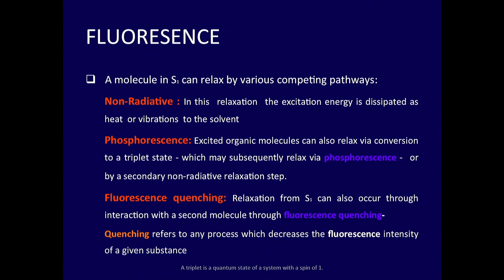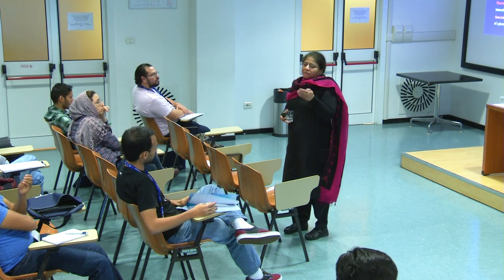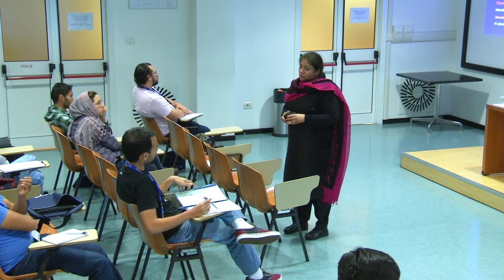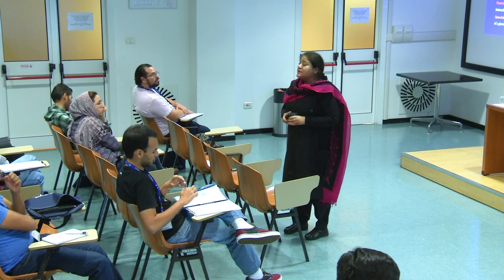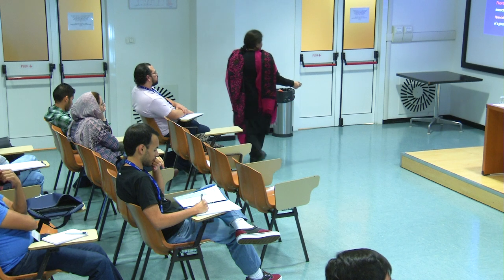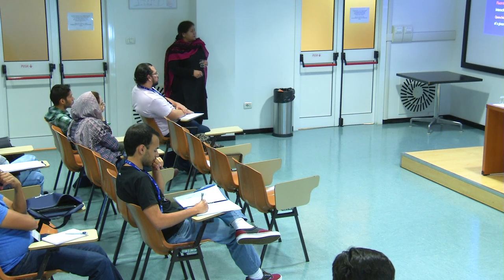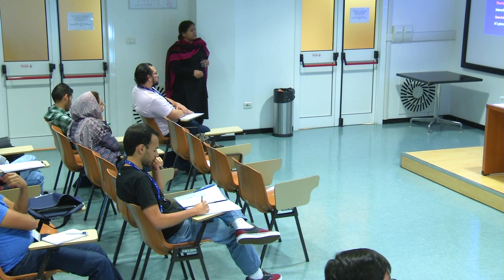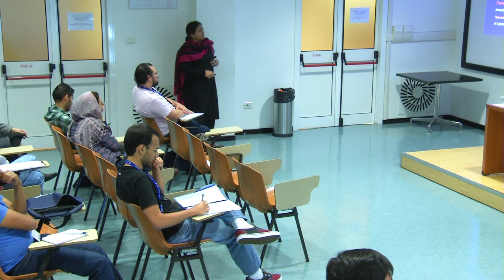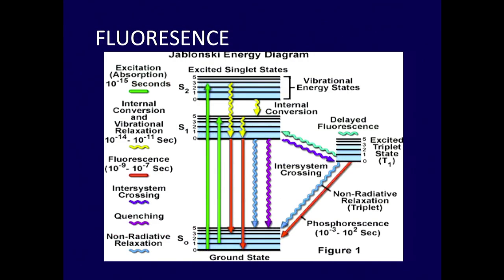The difference between fluorescence and phosphorescence is that phosphorescence comes from the triplet state. Even if you stop the excitation source, you can still see phosphorescence. An excited organic molecule can relax by conversion to a triplet state, which may subsequently relax by phosphorescence or by a secondary non-radiative transition. Let me go to the Jablonski diagram to explain this.